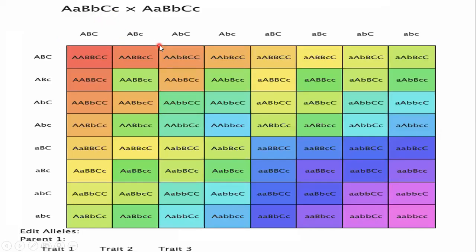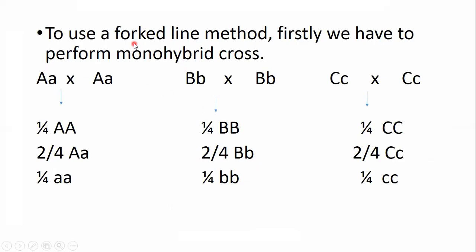We can use a Punnett square to calculate the number and types of offspring in F2 generation, but for that we would need eight rows and eight columns since eight gametes are formed by a single F1 parent — making it a very long and time-consuming procedure. So we can use another method called the forked line method. To use the forked line method, we first have to perform monohybrid crosses.